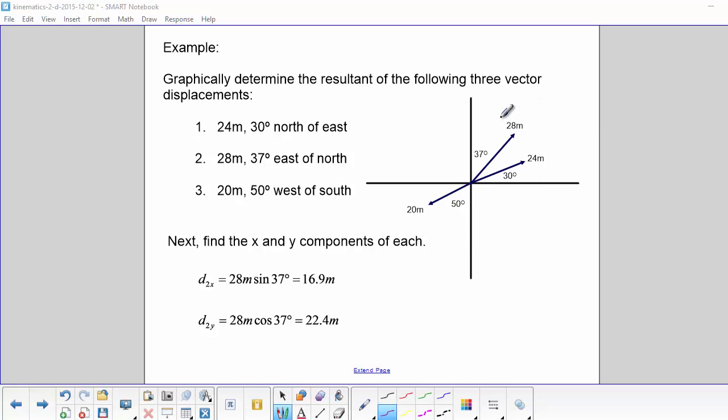Now for our second vector, our X component is actually opposite of the angle, so we need to use sine. And the Y component is adjacent to the angle, so we would need to use cosine.